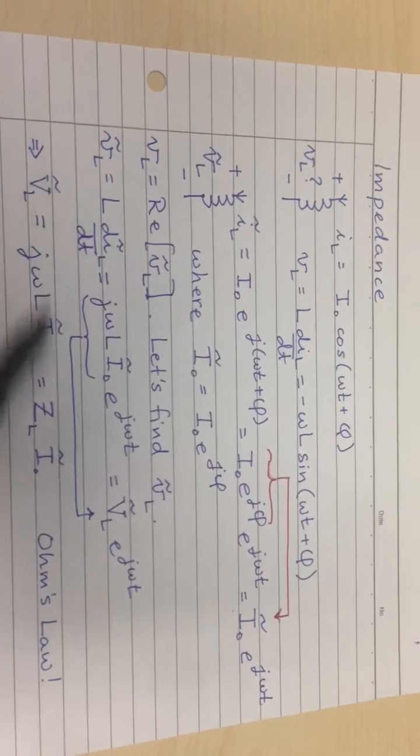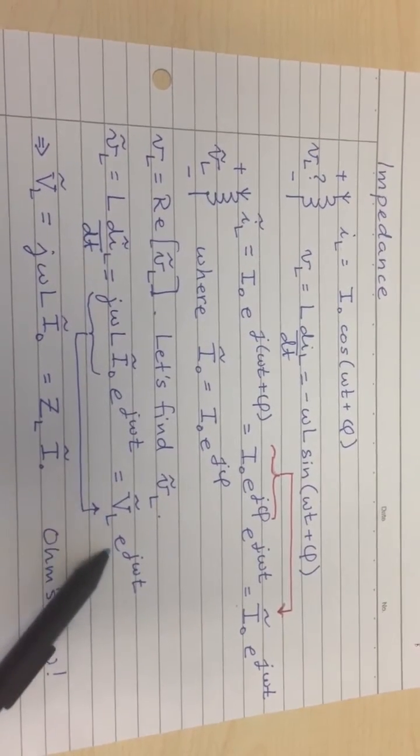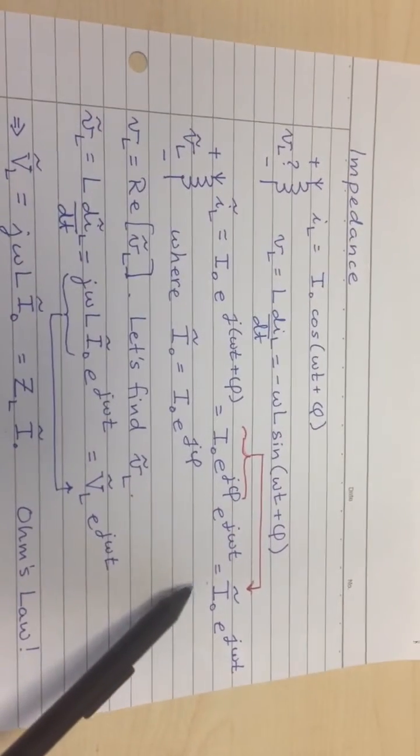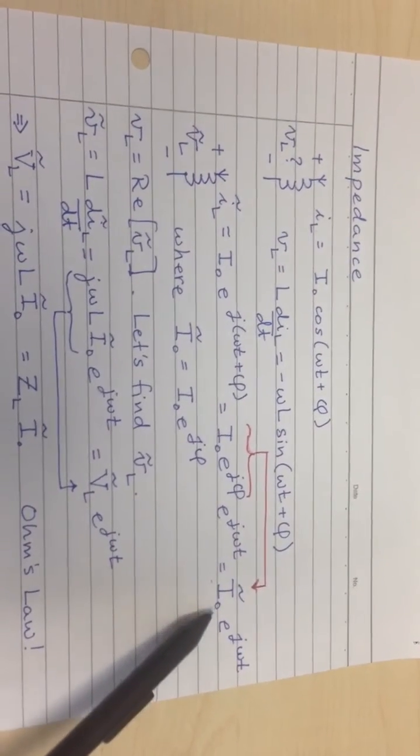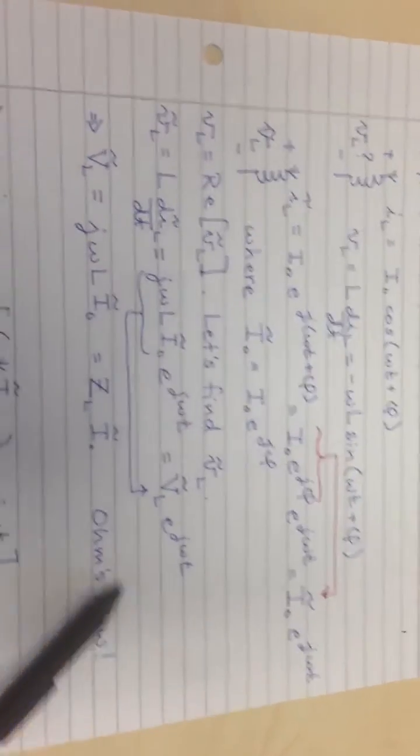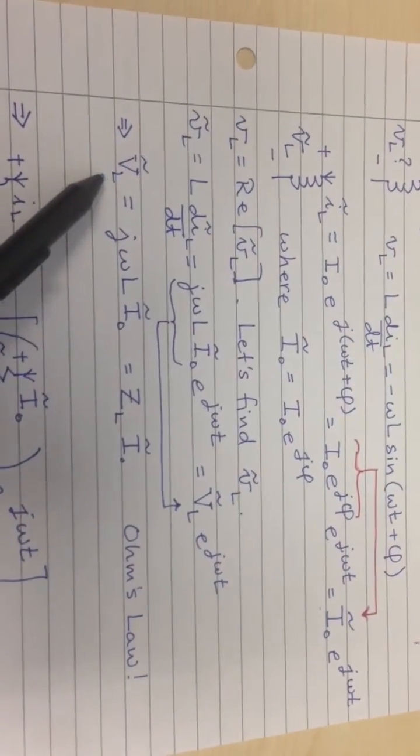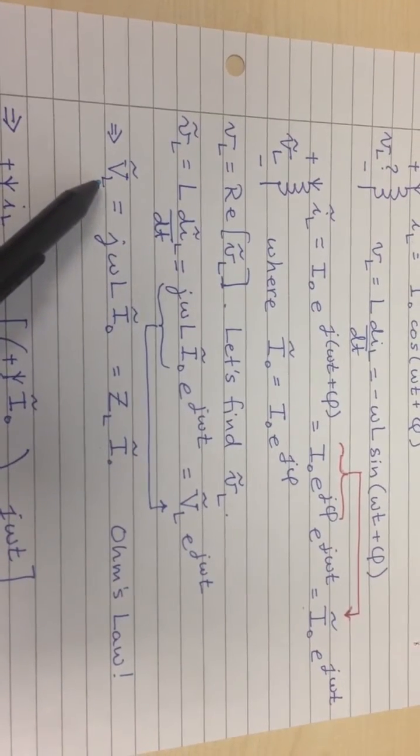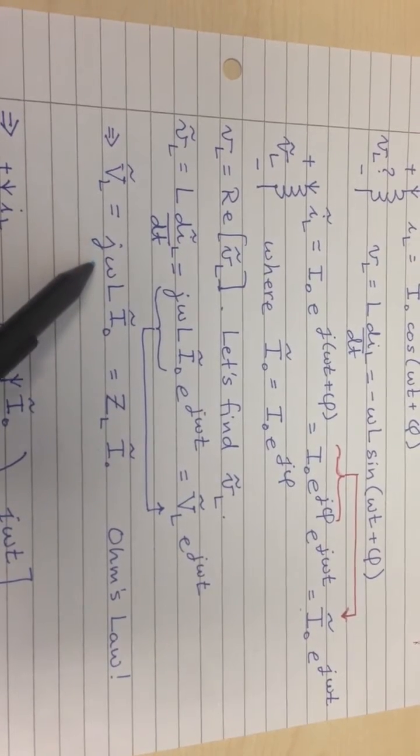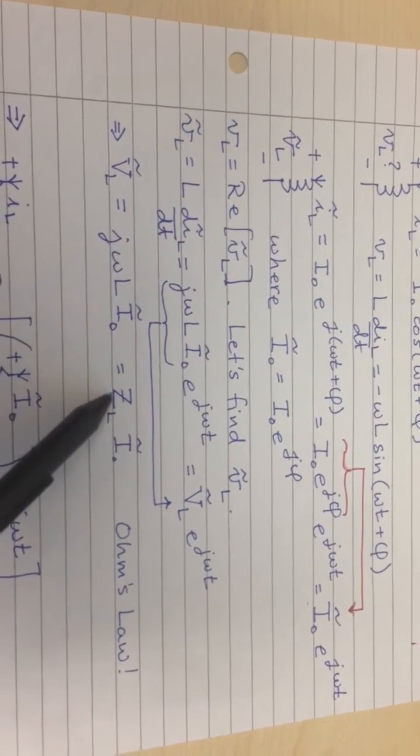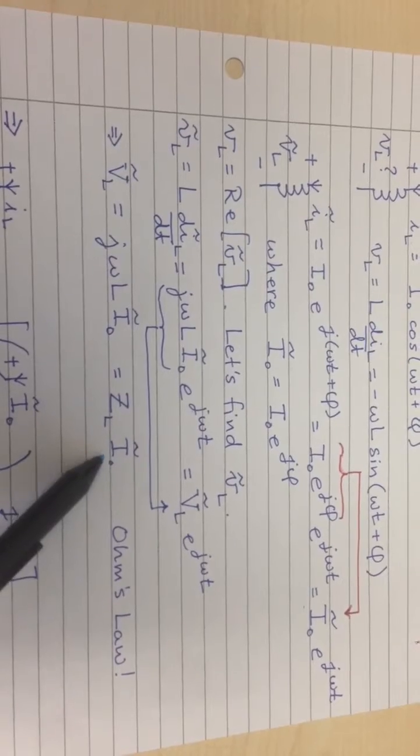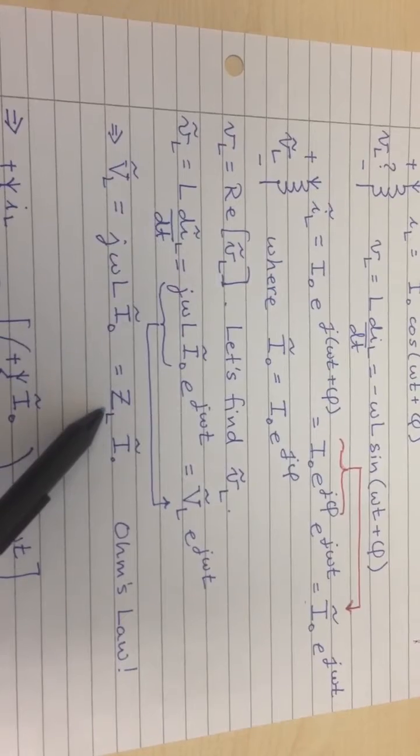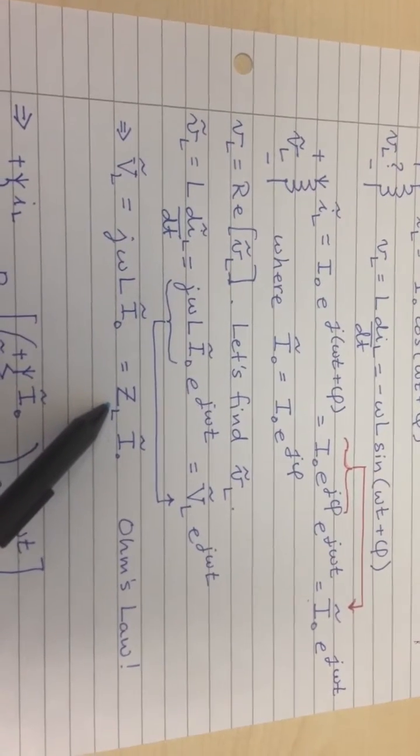And we write that as some complex amplitude times e to the j omega t. So the idea is that this VL tilde looks like this complex number times just this boring e to the j omega t. And we do that just like we did up here. We wrote the current as this complex number times this boring e to the j omega t. But by writing it that way, if we extract these complex coefficients, we find that VL tilde is actually just equal to j omega L I0 tilde, which is just a complex number times I0. So it's like a complex form of Ohm's law, V equals I times R, except now it's ZL instead of R, and it's a complex number.